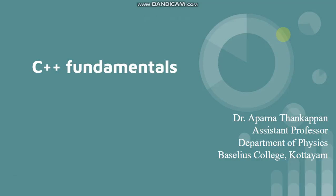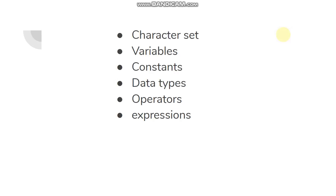Like all programming languages, C++ has its own vocabulary and grammar. In this section, we shall discuss about this C++ grammar consisting of character set, variables, constants, data types, operators and expressions.